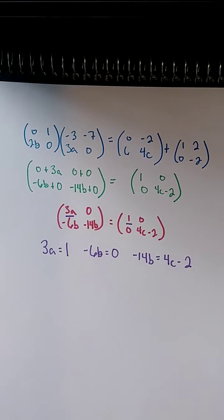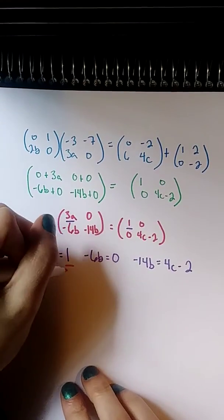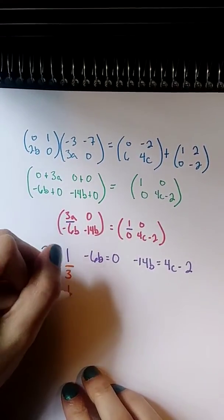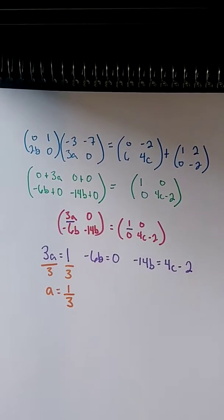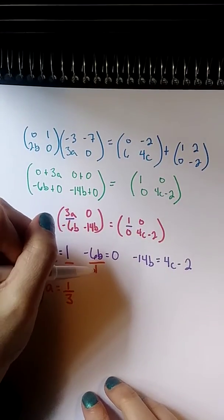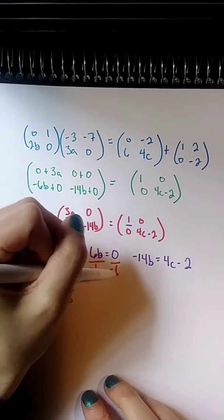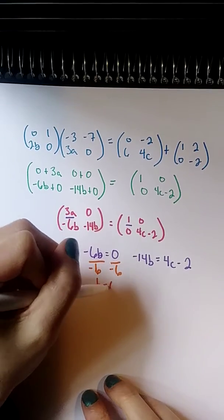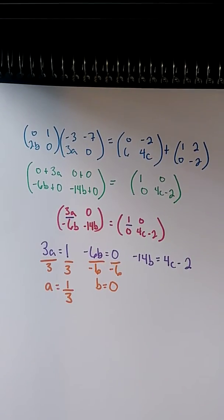So, let's see what I can do with this here. 3a equals 1. If I want to solve for a, I just divide both sides by 3. a equals 1/3. Beautiful. Now, -6b equals 0. I can get b by itself by dividing both sides by -6. And I get b equals 0, because 0 divided by anything is just 0.